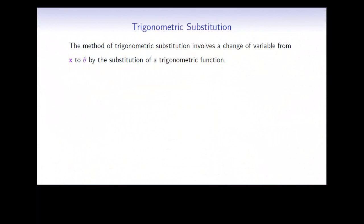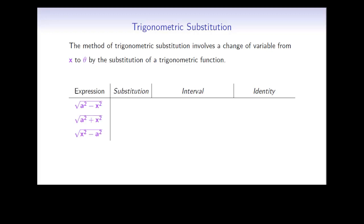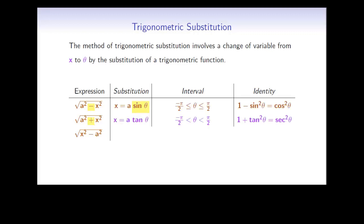Trigonometric substitution is a type of substitution that involves a change of variable from x to theta, and we would usually use it when you have an integrand involving one of three types of square roots. If it involves the square root of a² minus x², substitute x equals a sine theta. If it involves the square root of a² plus x², substitute x equals a tan theta. And if your expression involves the square root of x² minus a², substitute x equals a secant theta.